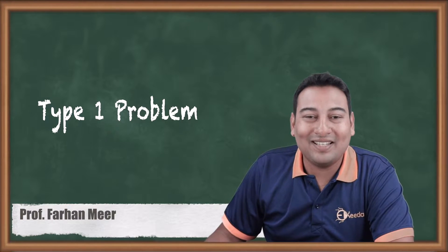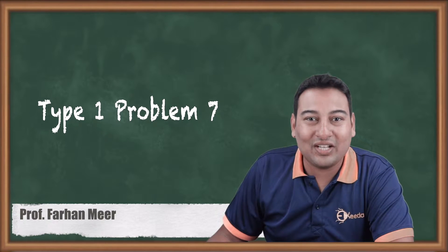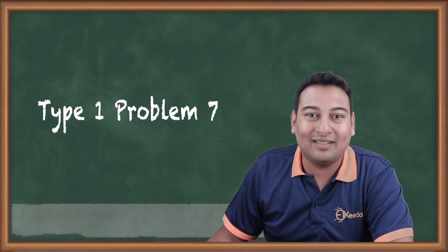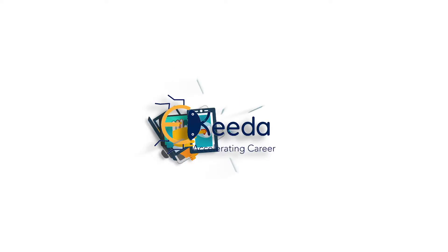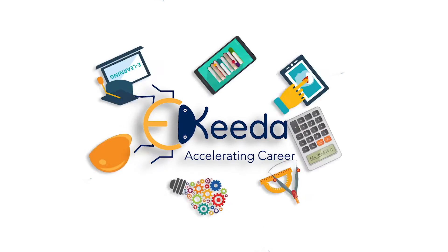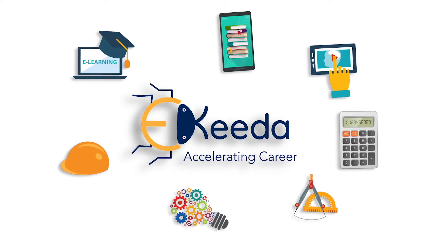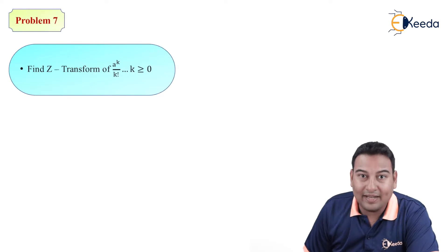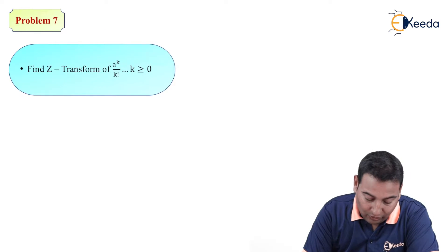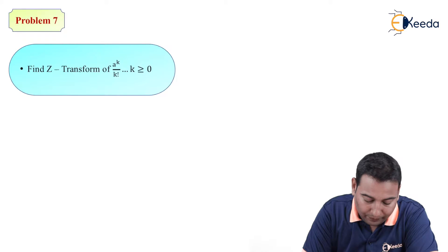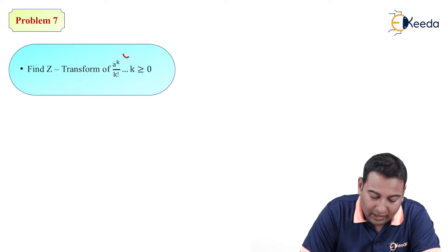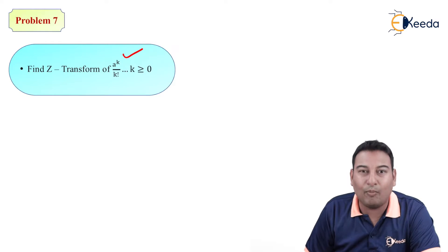Hello friends, in this video we'll be discussing Z-transform and this is our seventh example. The given problem is to find the Z-transform of a^k upon k factorial.